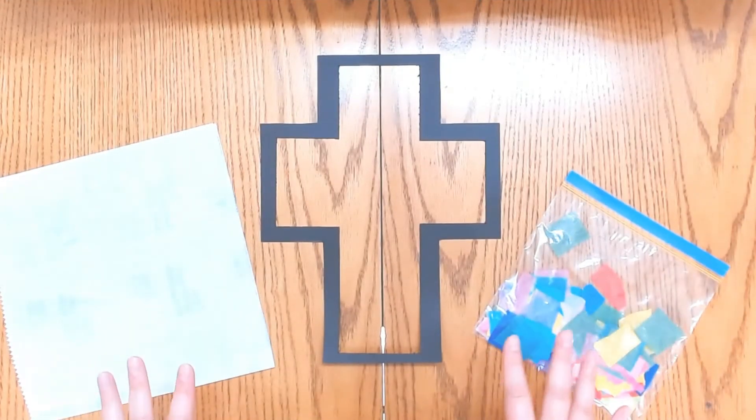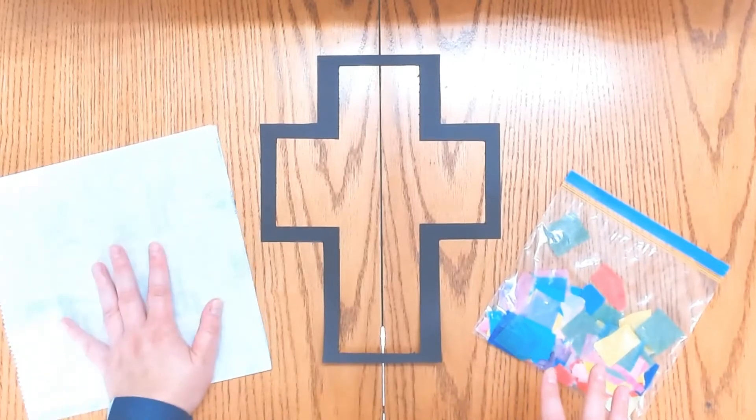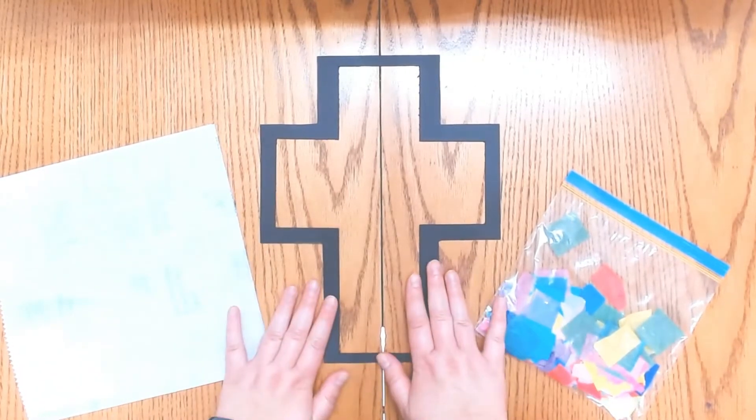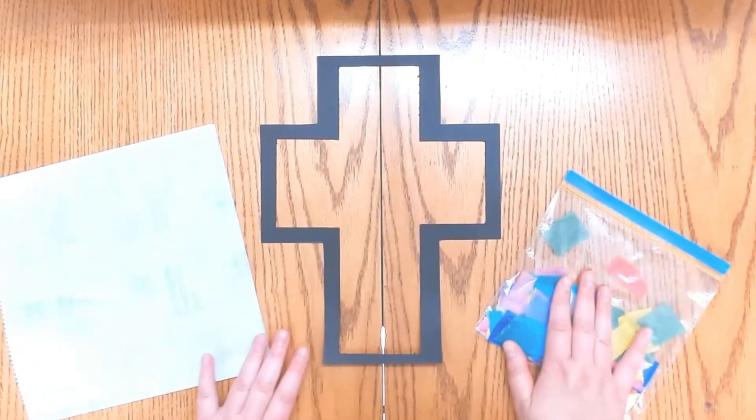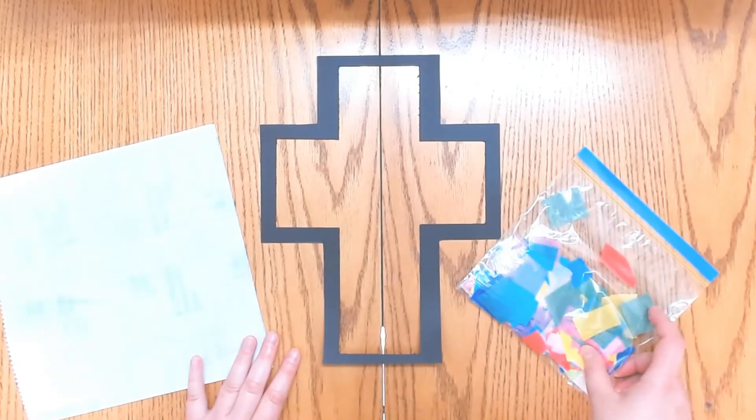So we're going to need three things to make this. Transparent adhesive paper, a cutout of a cross, and some pieces of colored tissue paper.